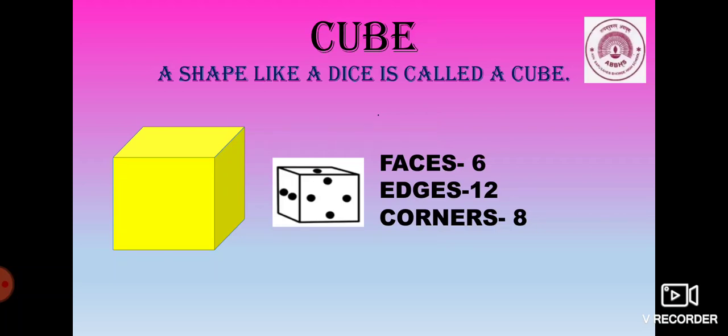Now, tell me, students, which shape is this? Yes, this is a cube. A shape like dice is called a cube. How many edges does it have, children? It has 12 edges. How many corners does it have? It has 8 corners. And how many faces does it have, children? It has 6 faces.